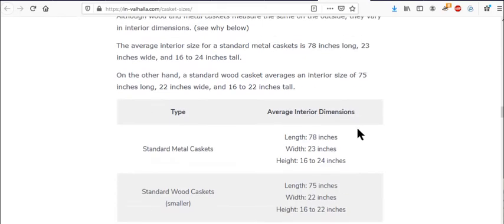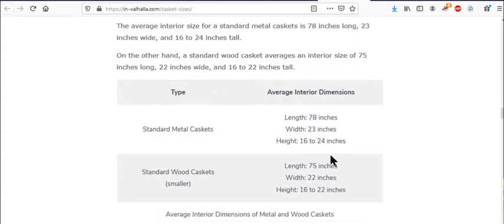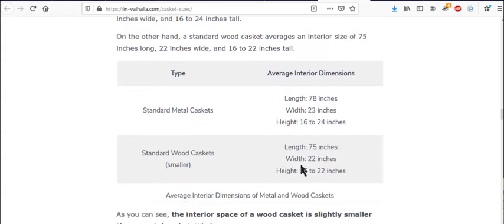And interestingly enough, if you look up casket sizes or coffin sizes, you'll find something like this. So here's a standard metal coffin, standard wooden casket or coffin. So this is 78 inches. If you go 78 divided by 12, you will get about six and a half feet. And this is 23 inches, about two feet. And 24 inches is about two feet. So you have about seven times two is 14 times two is 28. So coffin is going to be about 28 cubic feet or a little bit less.